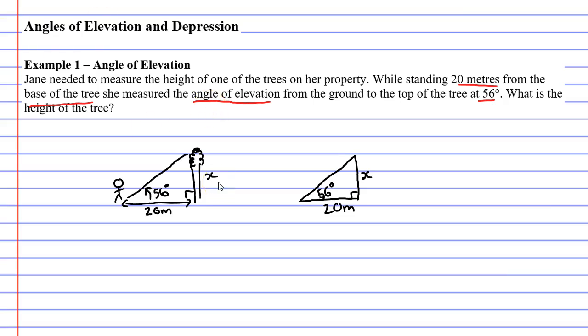So we're going to start by labelling this triangle. X is the opposite. Our hypotenuse is this side here. And our 20 metre length is our adjacent. So we're going to cross off our hypotenuse. We're using opposite and adjacent. And if we look at our acronym SOHCAHTOA.